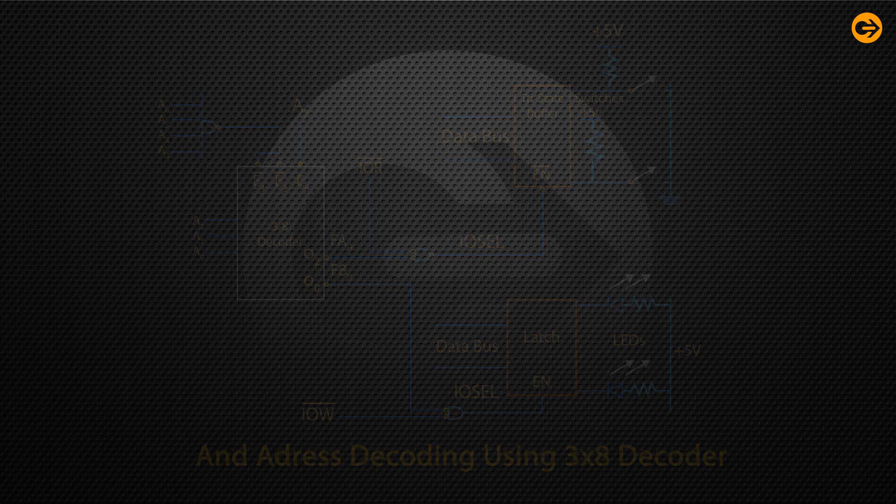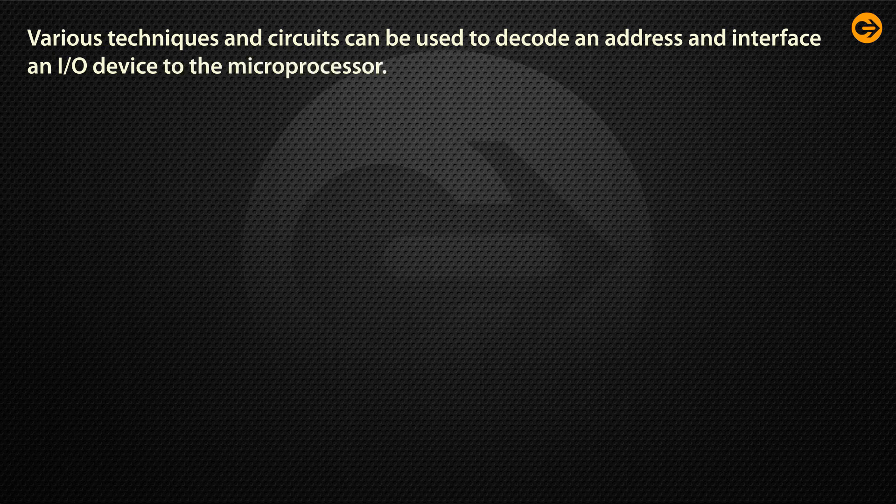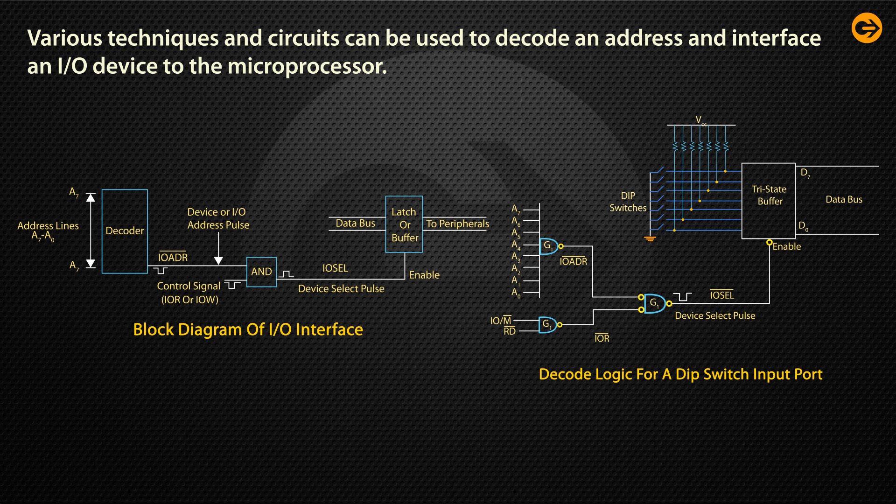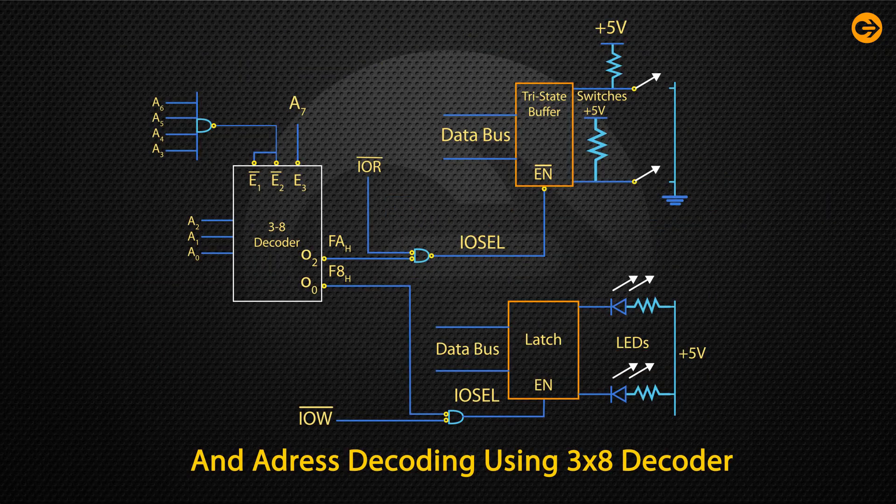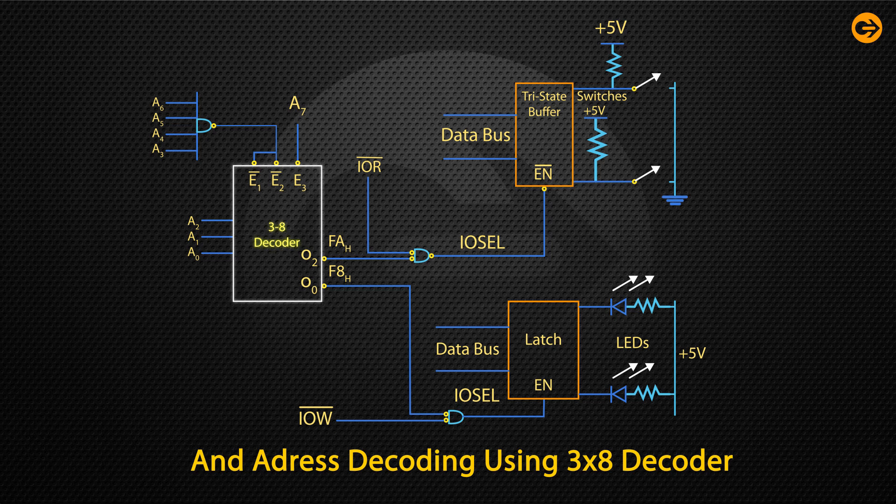Various techniques and circuits can be used to decode an address and interface an I/O device to the microprocessor. The figures illustrate a method to device selection using an 8 input NAND gate. Figure illustrates another scheme of address decoding and in this circuit, a 4 input NAND gate and a 3x8 decoder are utilized to decode the address bus.